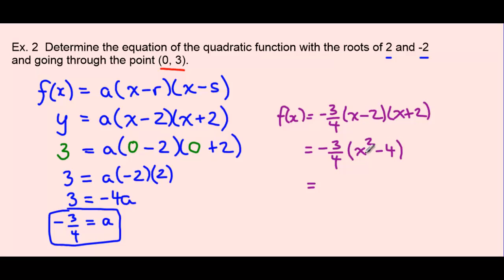We will then multiply this through. So we have negative 3x squared over 4. And then negative 3 fourths times negative 4 is positive 3. And here we have our f(x) equals negative 3 fourths x squared plus 3. And for quadratic, it's okay to leave a fraction here as our a value.